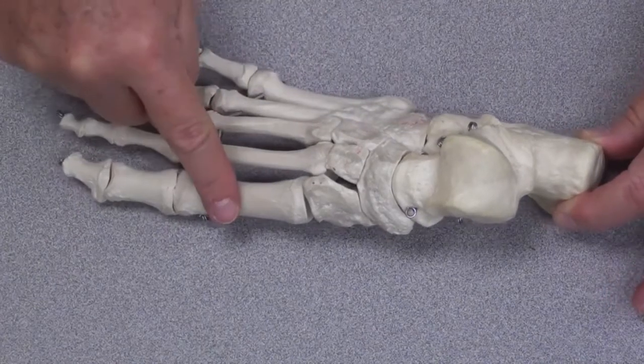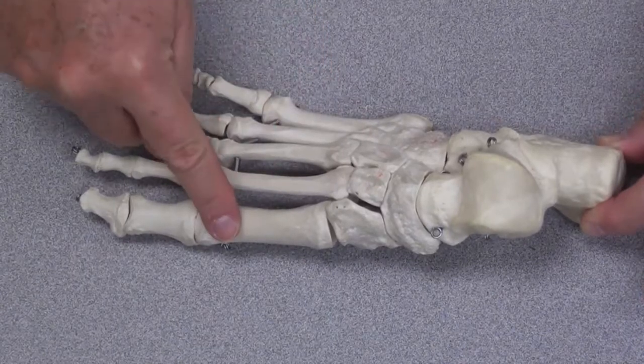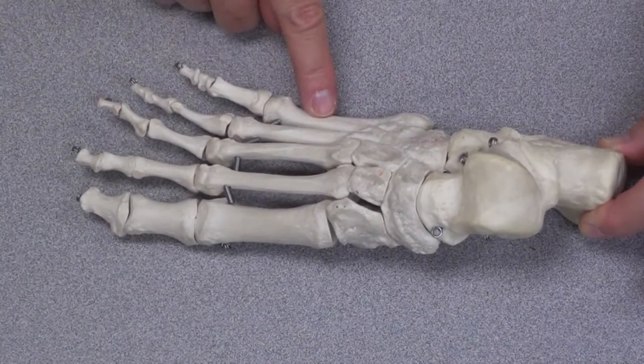Distal to the tarsal bones, you'll find five metatarsals. One, two, three, four, and five, the fifth metatarsal.